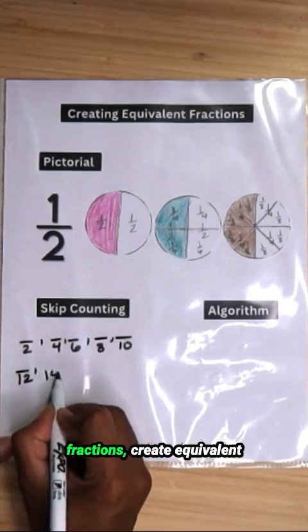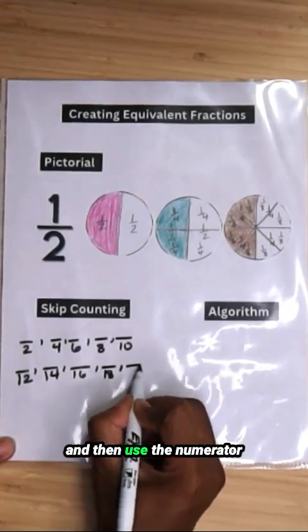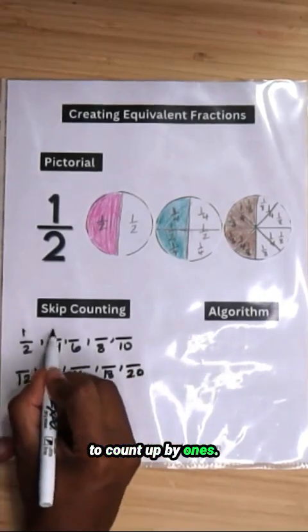Next, using the same fraction, create equivalent fractions by using the denominator to skip count and then use the numerator to count up by ones.